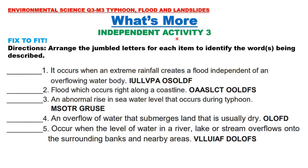Independent Activity Three: Arrange the jumbled letters to identify the words being described. Number one — it occurs when extreme rainfall creates a flood independent of an overflowing body of water. Two — flood which occurs right along a coastline. Three — an abnormal rise in seawater level that occurs during a typhoon. Four — an overflow of water that submerges land that is usually dry. Five — it occurs when the level of water in a river, lake, or stream overflows onto surrounding banks and nearby areas.